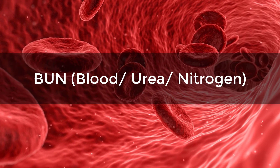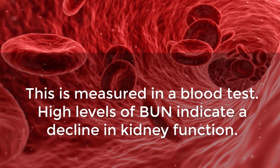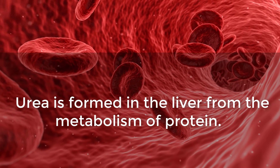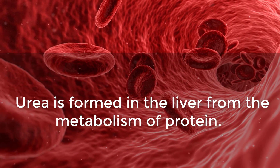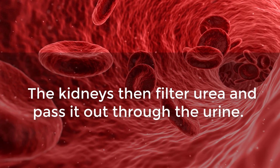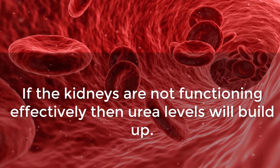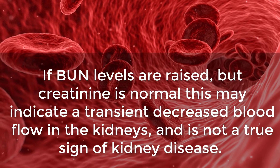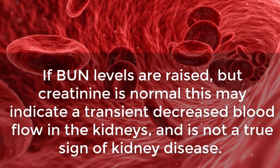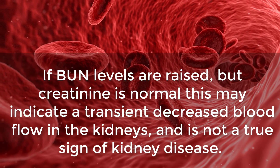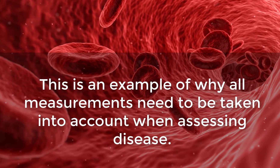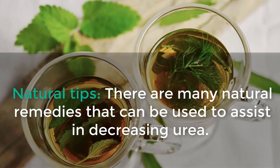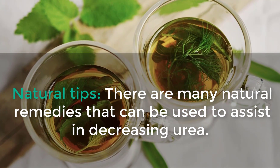BUN stands for Blood Urea Nitrogen, measured in a blood test. High levels of BUN indicate a decline in kidney function. Urea is formed in the liver from the metabolism of protein; the kidneys then filter urea and pass it out through the urine. If the kidneys are not functioning effectively, urea levels will build up. If BUN levels are raised but creatinine is normal, this may indicate decreased blood flow in the kidneys and is not a true sign of kidney disease. This is an example of why all measurements need to be taken into account when assessing disease.